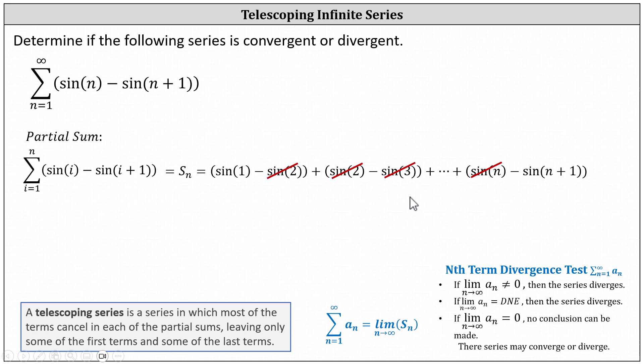So now we have a formula for the partial sum S sub n: S sub n equals sine 1 minus sine of the quantity n plus 1.